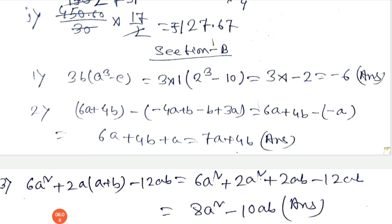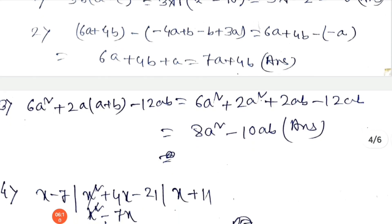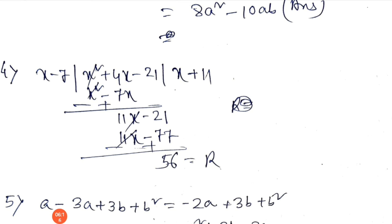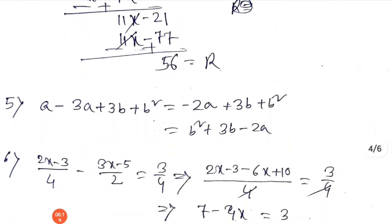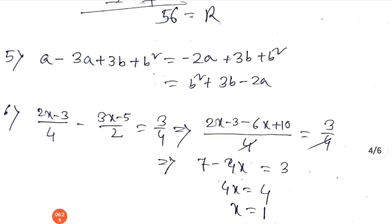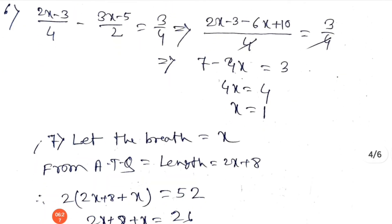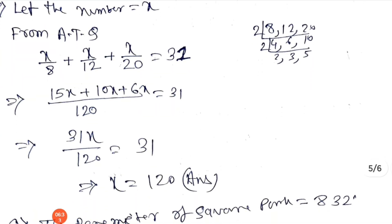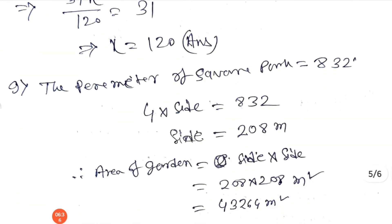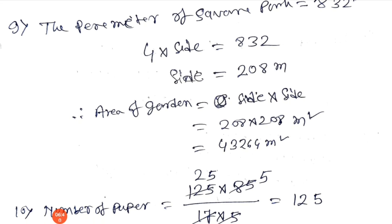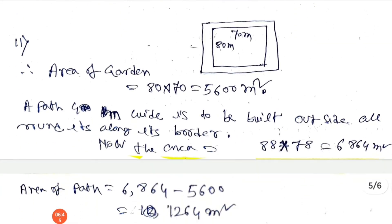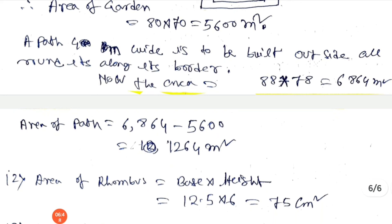Section B answers. Question 1 answer: minus 6. Question 2 answer: 7a plus 4b. Question 3 answer: 8a squared minus 10ab. Question 4 answer: remainder 56, quotient x plus 11. Question 5 answer: b squared plus 3b minus 2a. The value of x is 1. Breadth is 6 and length is 20. Question 8 answer: x equals 120. Question 9 answer: 43,246.4 square meters. Question 10 answer: 12,125. Question 11 answer: 12,125.